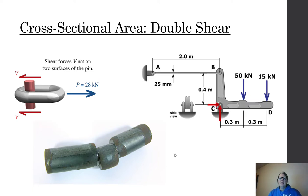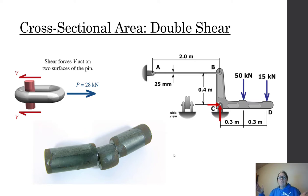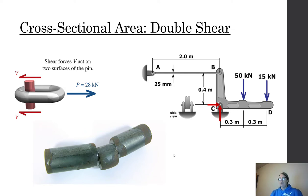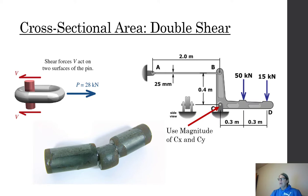Keep in mind that in statics we find reactions at a pin by finding the x and y components, but the magnitude is the force I'm concerned with — the magnitude is the long end of the triangle vector, the actual force being resisted. When you find a pinned connection with components Cx and Cy, you must find the magnitude of C: square root of (Cx² + Cy²) using the Pythagorean theorem. Use that magnitude to calculate the actual shear force on the pin.